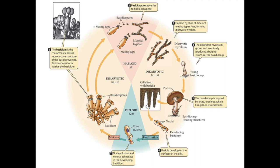The basidiocarp is topped with a cap that has gills on its undersides. The gills are lined with dicharyotic cells called basidia.